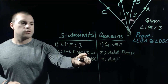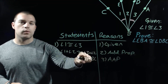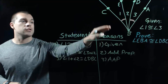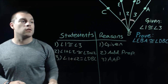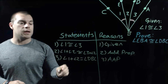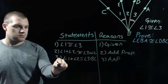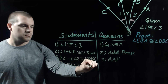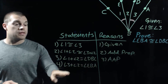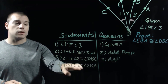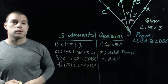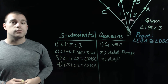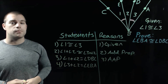We can also do something similar with angle 3 and angle 2. If we look, those two angles make up the big angle EBA. So we get the statement that angle 3 plus angle 2 equals angle EBA, and again, that's using our angle addition postulate.